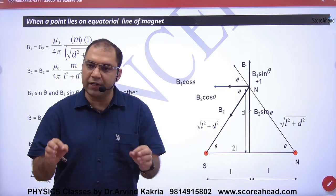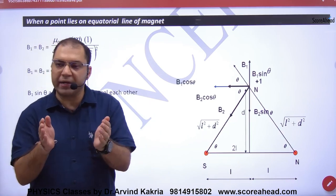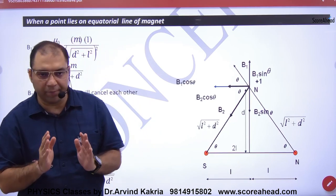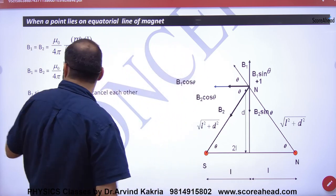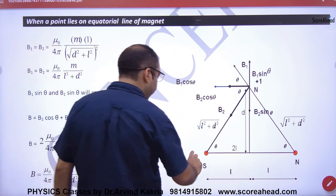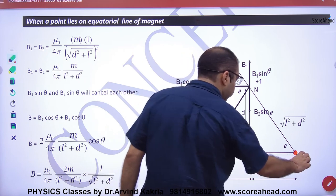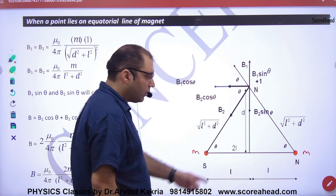We have to derive the magnetic field from a magnetic dipole in the equatorial line. What is the equatorial line? This is a dipole. The pole strength is small m, separated by 2L. This is the equatorial line.